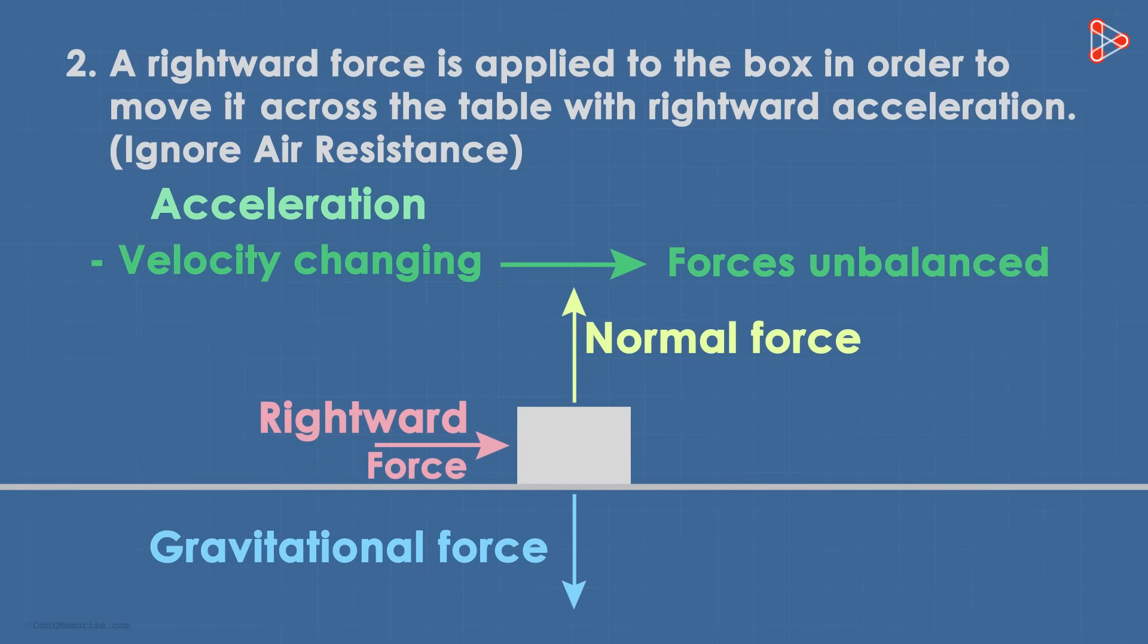The upward and the downward forces net each other off. What about the leftward and the rightward forces? Now because there is a rightward applied force, we show an arrow towards the right. Will there be any leftward force on the box? As we've been asked to ignore air resistance, it will only be the force of friction acting towards the left.